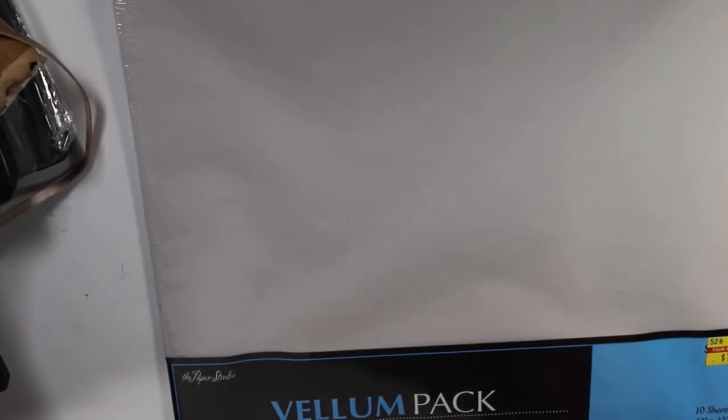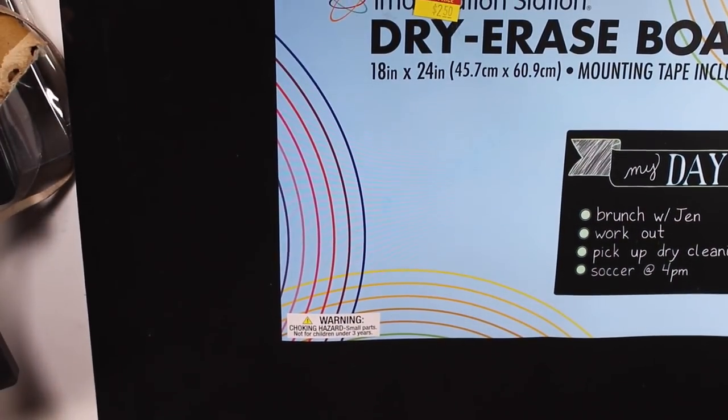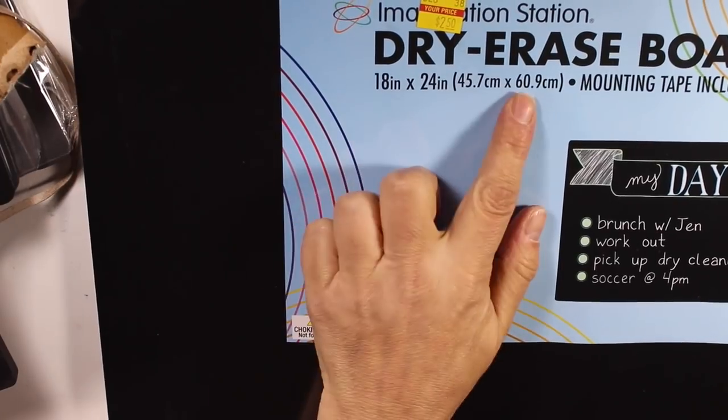This vellum, 10 sheets for a dollar. It's 12 by 12 vellum. I got this dry erase blackboard. And this is an 18 by 24 board. It was $2.50 regular $10. It's not magnetic.